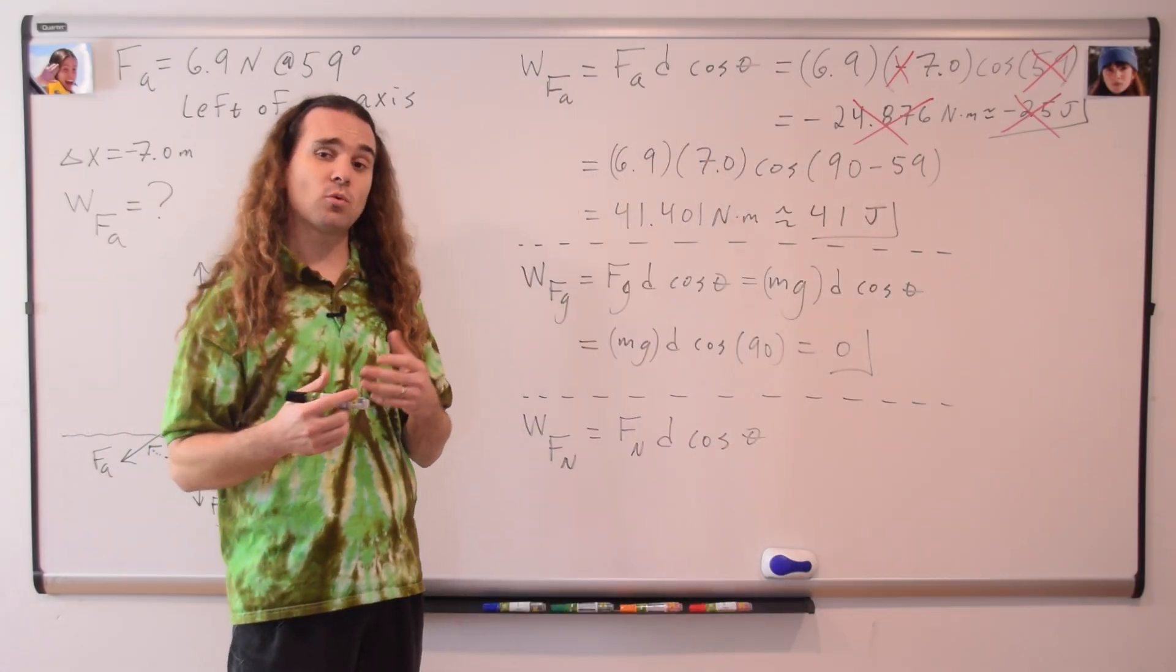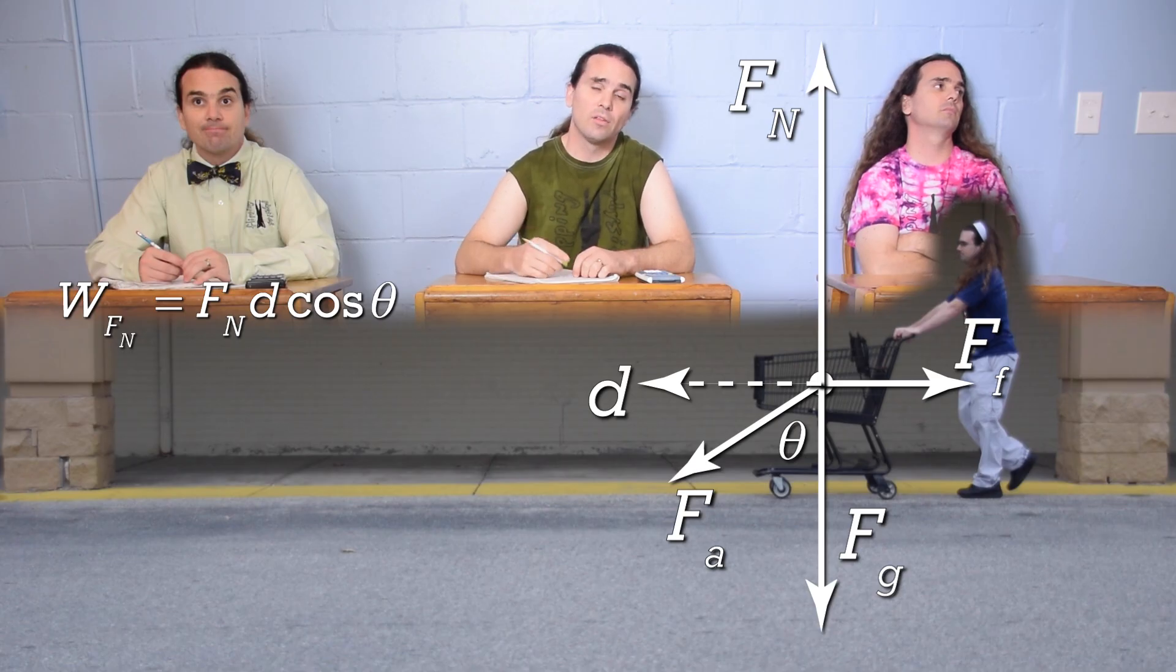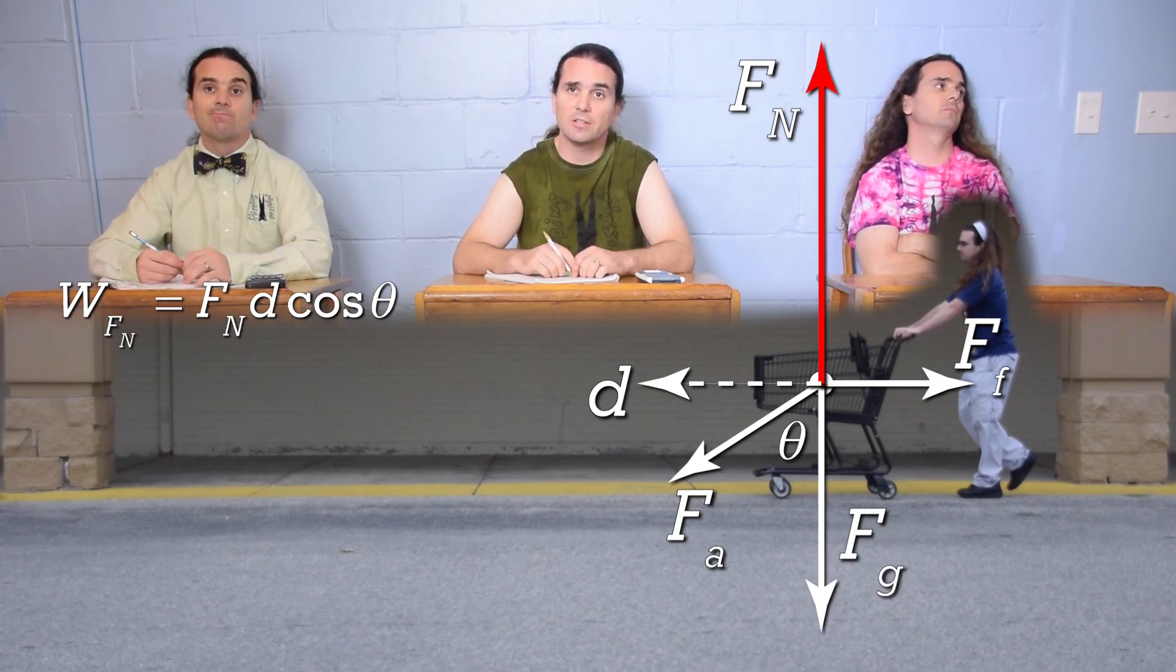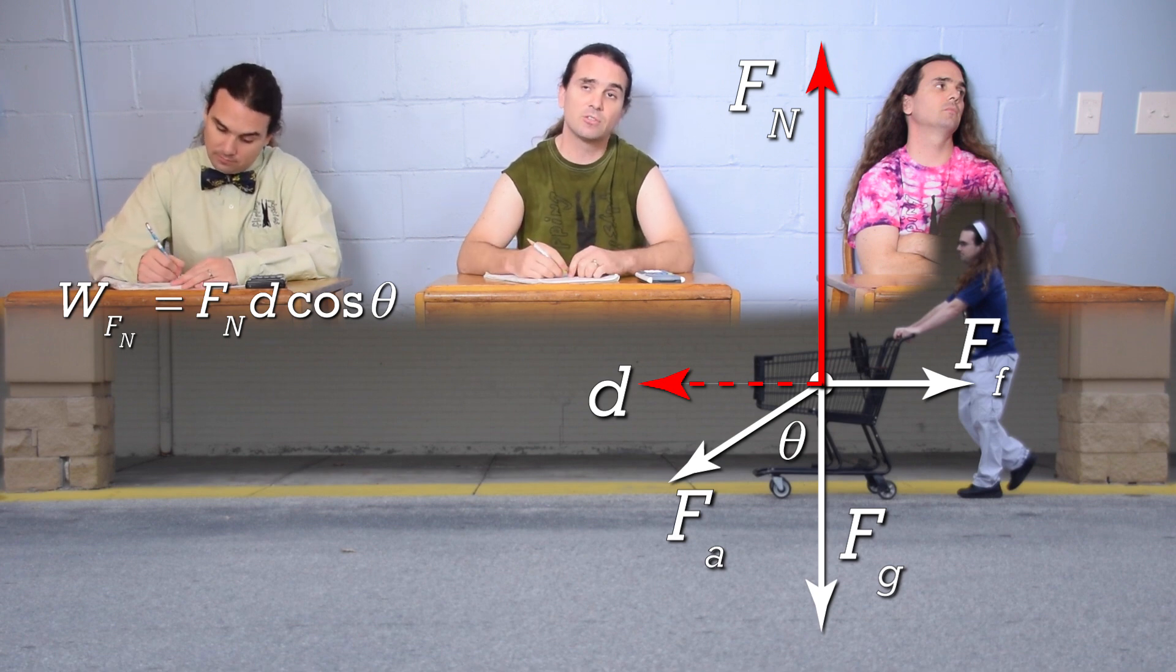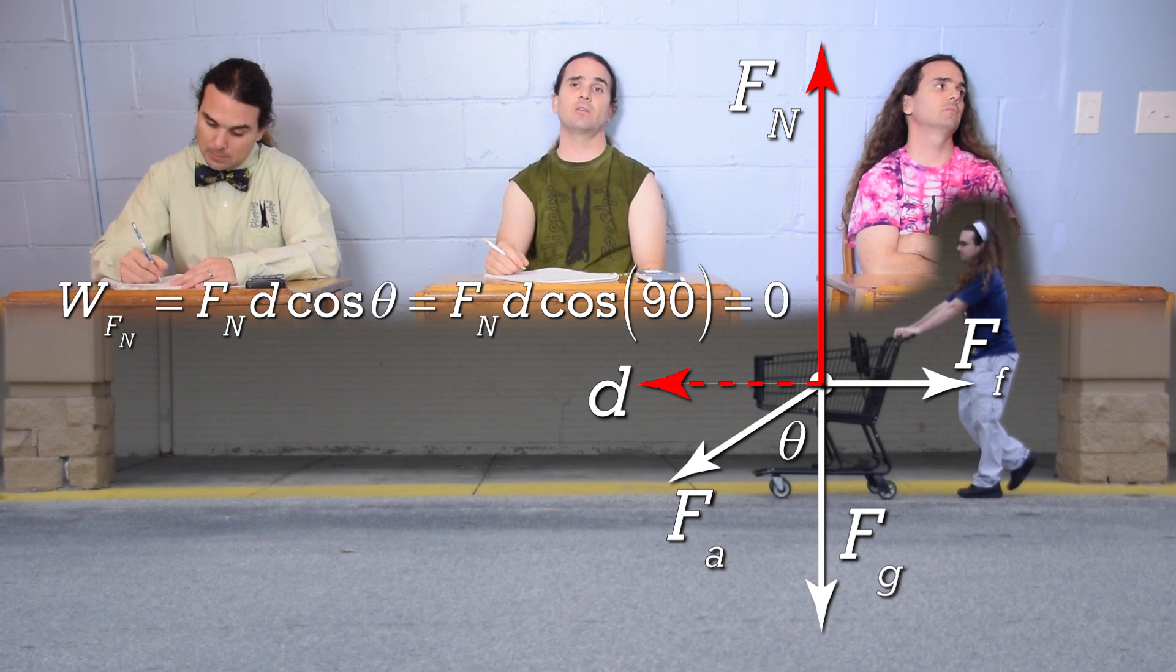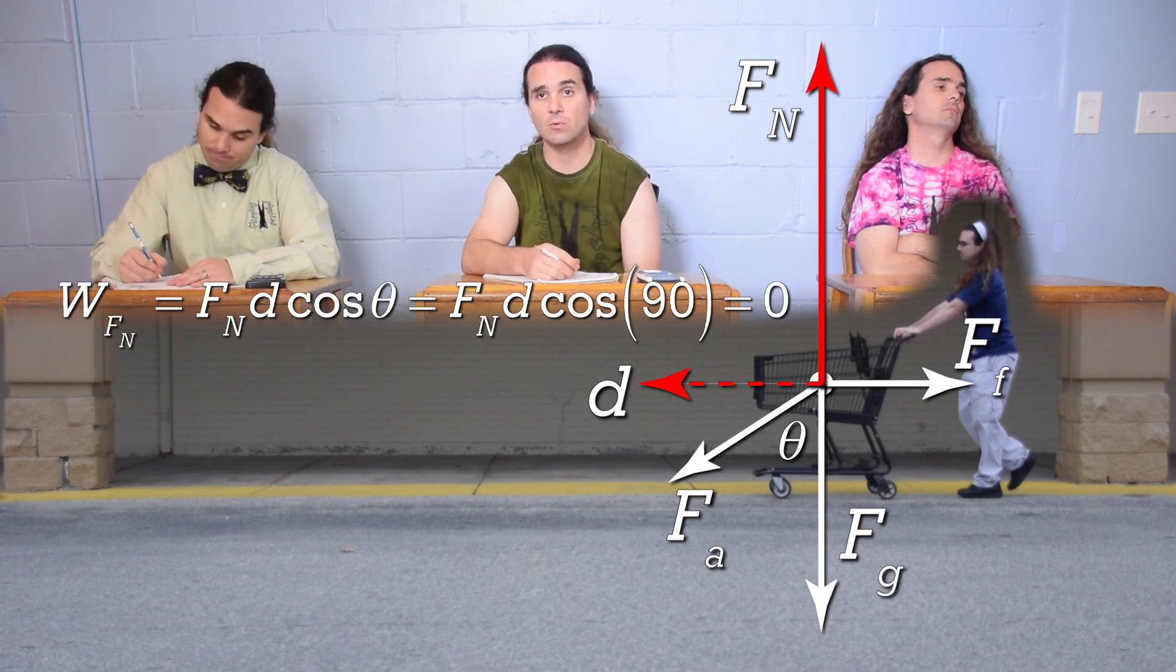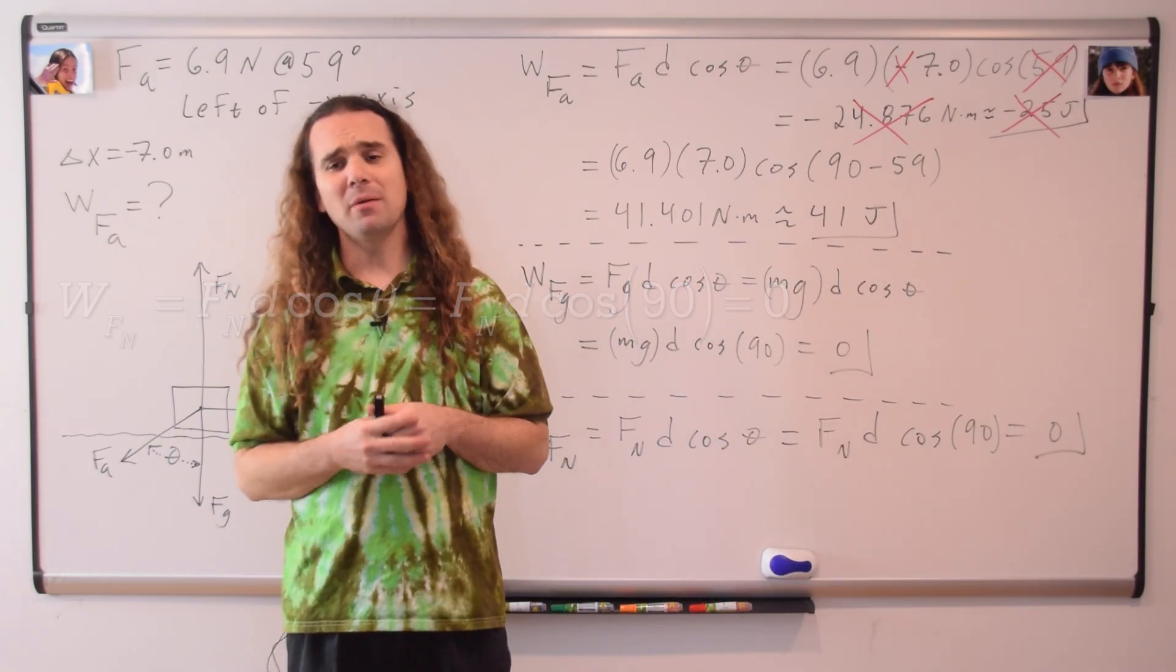Mr. P: We can also figure out the work done on the cart by the force normal. Bobby? Well, the force normal is up and the cart is displaced to the left. Again, the angle between those two directions is 90 degrees, and the cosine of 90 degrees is zero, so the work done by the force normal on the cart is zero, just like the work done by the force of gravity. Thank you, Bobby.